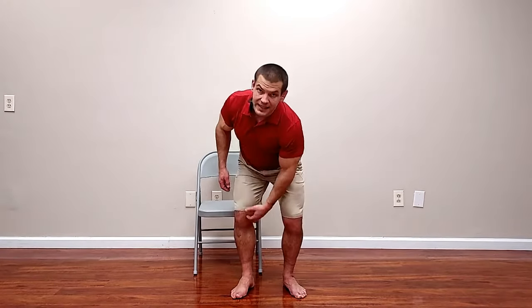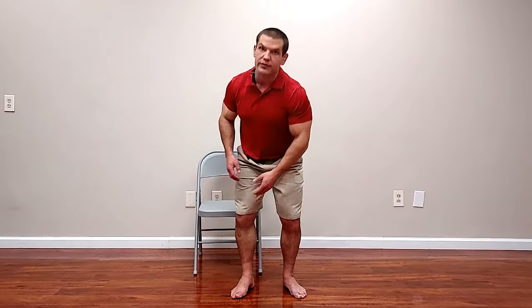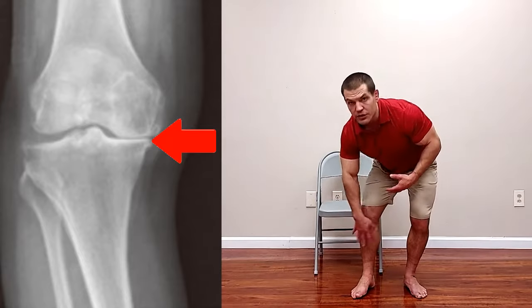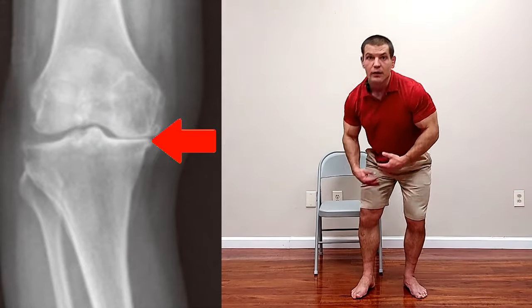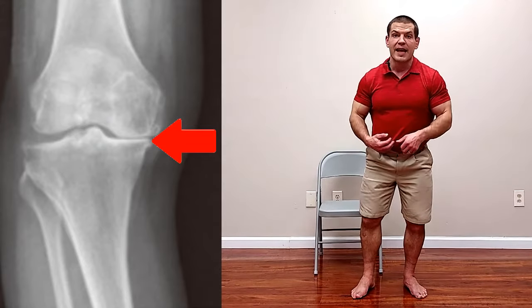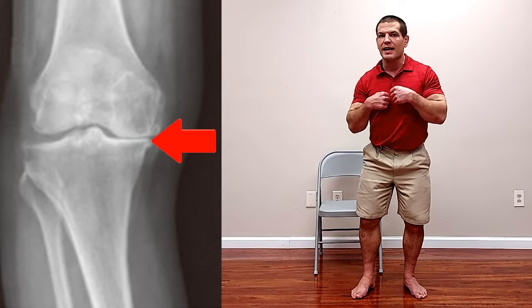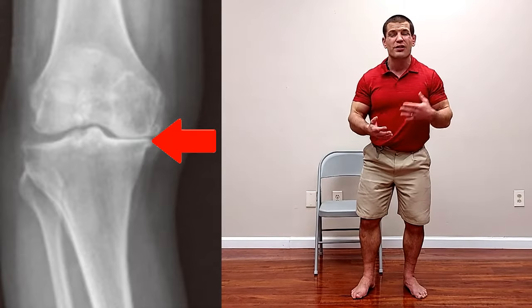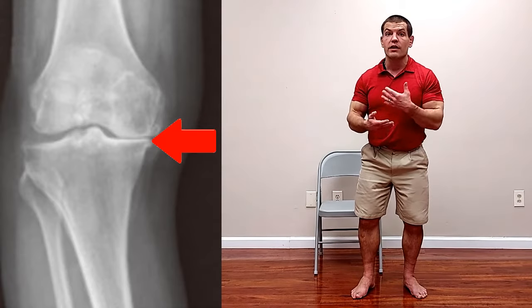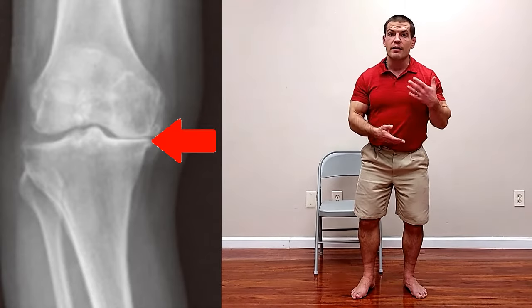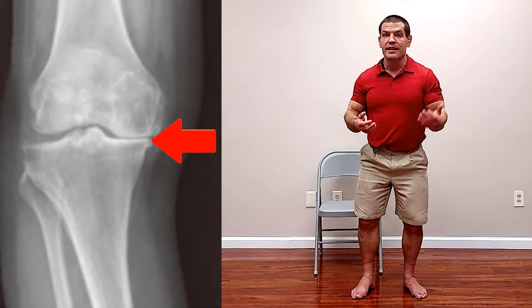Let's start inside the joint. The structures inside the actual knee joint that can cause pain on the inside of your knee include the actual joint surfaces themselves — the cartilage on the ends of the tibia, which is your lower leg bone, and the femur, which is your upper leg bone. If you've worn down the cartilage between those two surfaces, you can get grinding of bone on bone, and that can cause inflammation and pain on the inside of your knee.